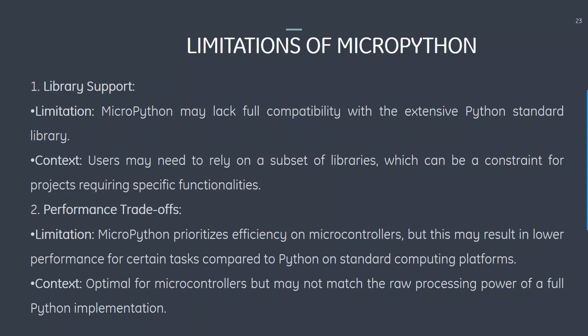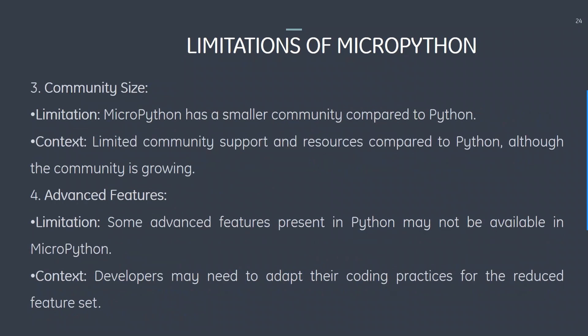Limitations of MicroPython: First, library support — MicroPython may lack full compatibility with Python's extensive standard library, with users relying on a subset that can be constraining for projects requiring specific functionalities. Second, performance trade-offs — MicroPython prioritizes efficiency on microcontrollers, but this may result in lower performance for certain tasks compared to Python on standard computing platforms. Third, community size — MicroPython has a smaller community compared to Python, though it is growing. Fourth, some advanced features present in Python may not be available in MicroPython, and developers may need to adapt their coding practices accordingly.